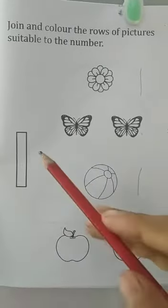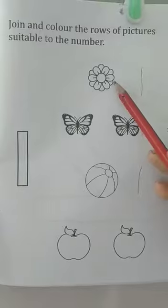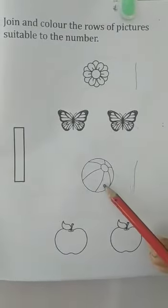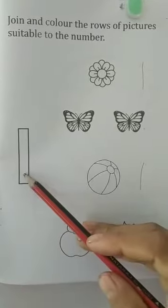Join and color the rows of pictures. You color 1 picture. 1 flower and 1 ball. Right? Color the number also.